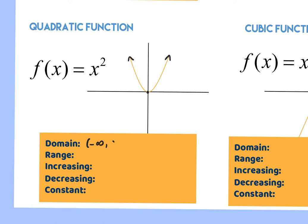The parabola has a rounded bottom, but otherwise the analysis is similar. The domain is negative infinity to positive infinity because arrows point left to right. The range starts at zero and goes to positive infinity — bracket on zero. Going left to right: decreasing from negative infinity to zero, then increasing from zero to positive infinity. There is no constant. So absolute value of x is the V, and x squared is the parabola.